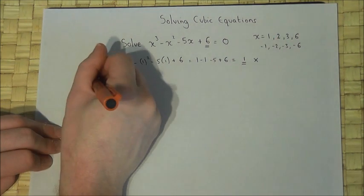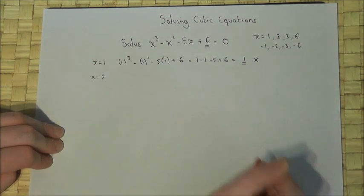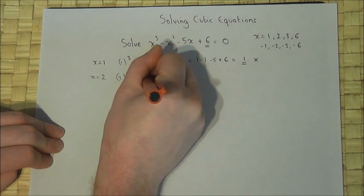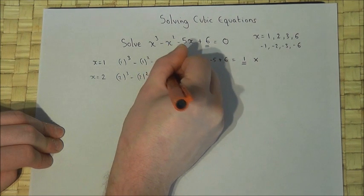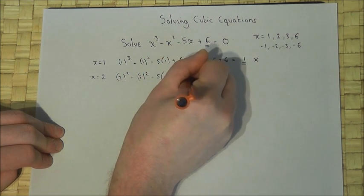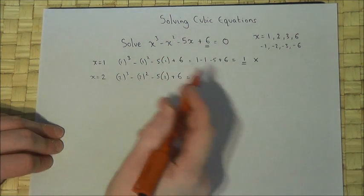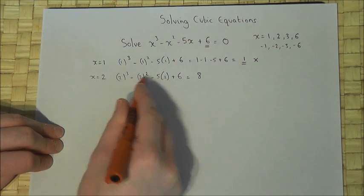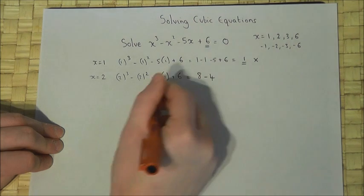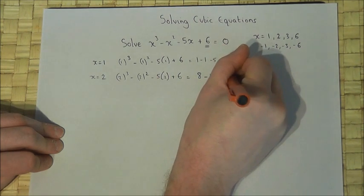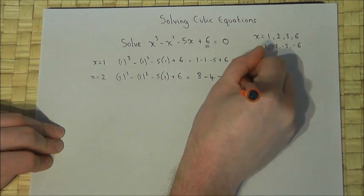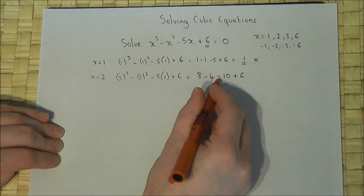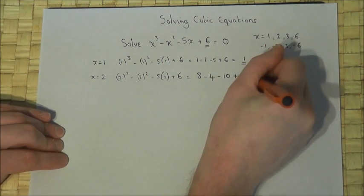I'll then try 2. So I'll now sub 2 in: 2 cubed, take away 2 squared, take 5 times 2, plus 6. Let's be a bit more careful now. 2 cubed is 8, 2 squared is 4 so take away 4, 5 times 2 is 10 so take away 10, plus 6. 8 take 4 is 4, 4 take 10 is minus 6, plus 6 is 0.